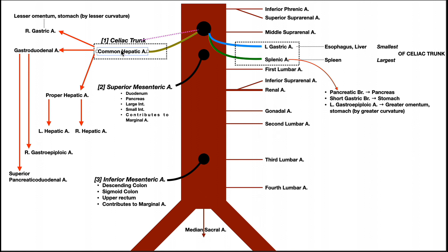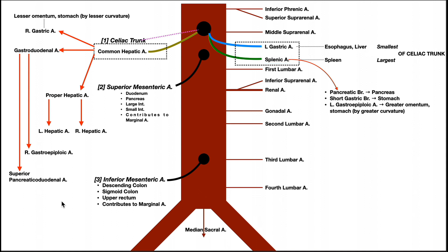The common hepatic artery's third branch is the proper hepatic artery, which goes directly to the liver. Near the liver it bifurcates into the left hepatic artery and right hepatic artery, supplying their respective halves. Through its three major branches — common hepatic, left gastric, and splenic — the celiac trunk supplies a huge portion of the GI tract.